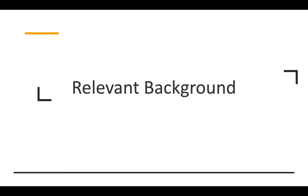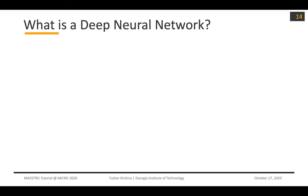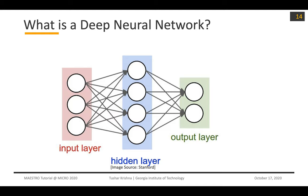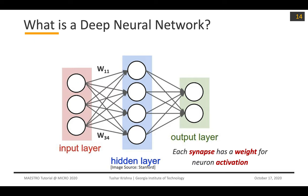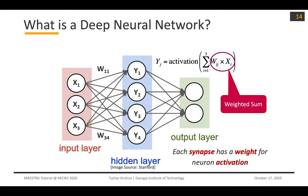Let me give you some brief relevant background to get everybody on the same page. What is a DNN? It's inspired by biological neural networks. There are neurons and synapses, and the idea is that each synapse has a weight associated with it for neuron activation. You have a bunch of inputs coming in from the neurons, and you do a weighted sum with the weights, then apply an activation function, and you get the outputs, which become the inputs for the next layer.